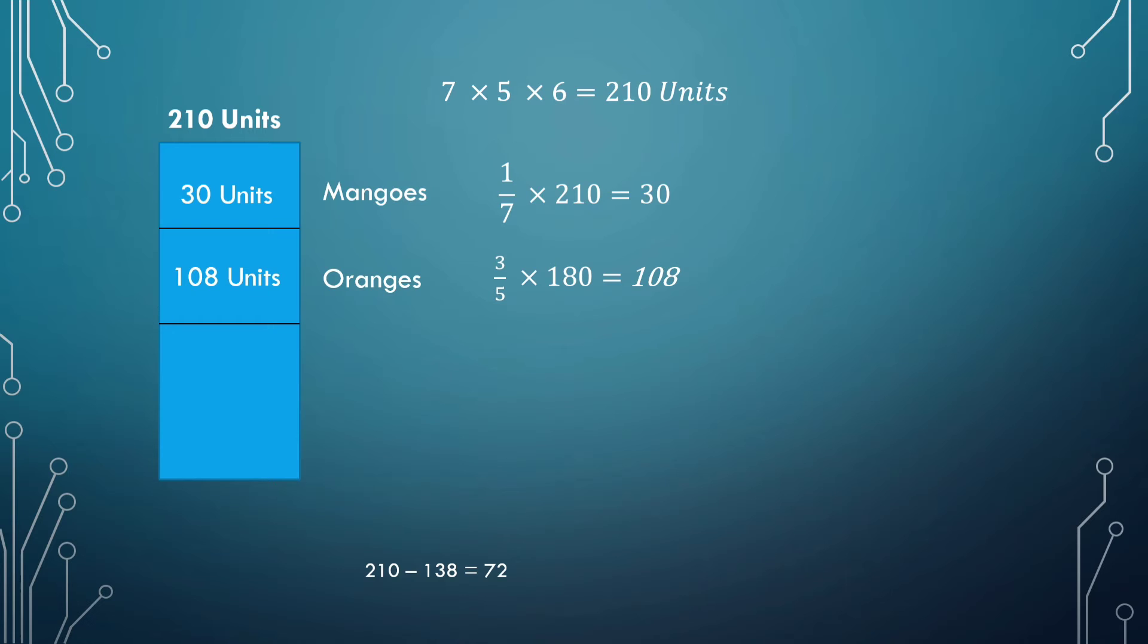So that if 5/6th of the remaining amount of units were spent on grapes, this means that is 5/6th of the 72, which is 60 units. When I divide here further to represent 60 units, this 60 units would represent the amount spent on grapes.